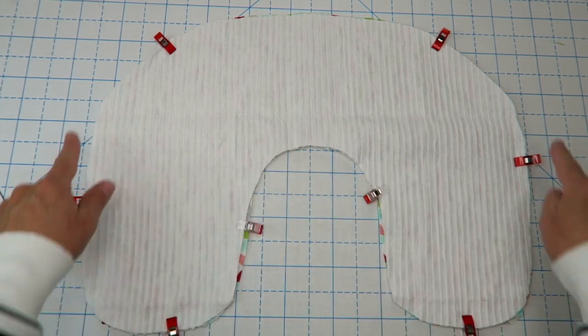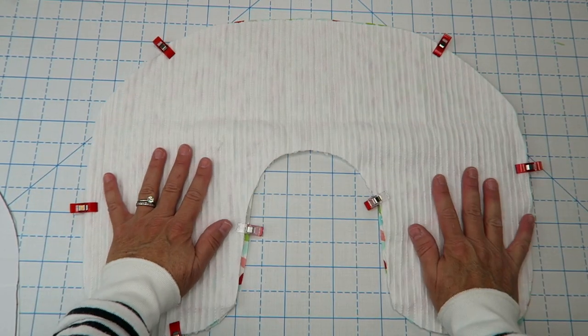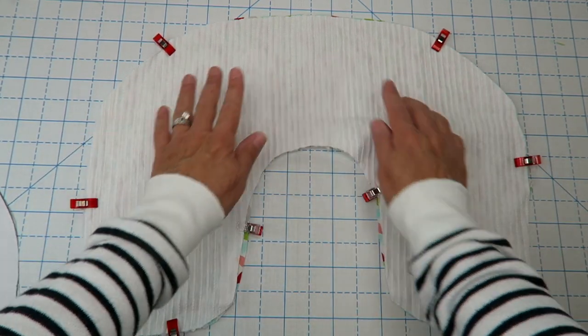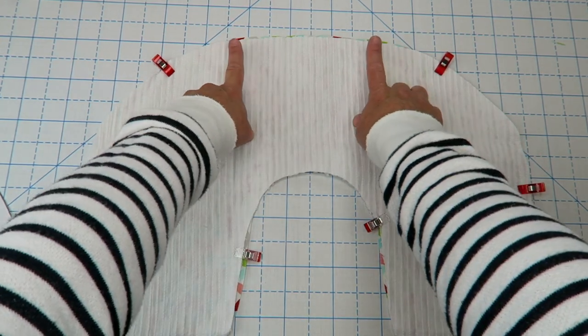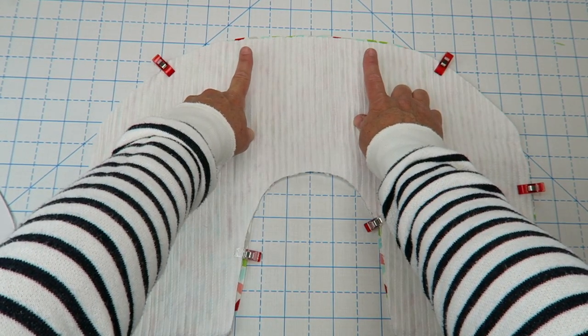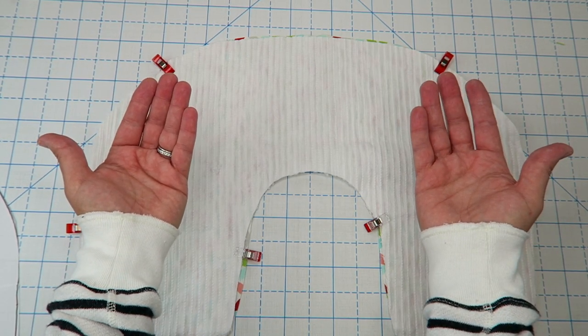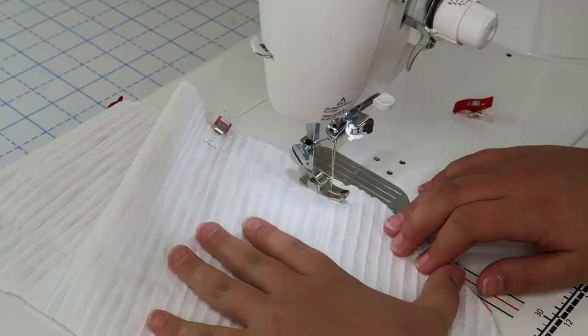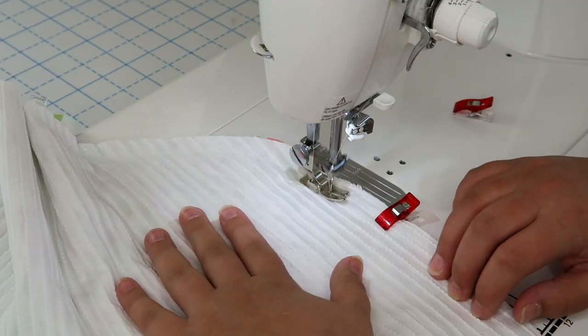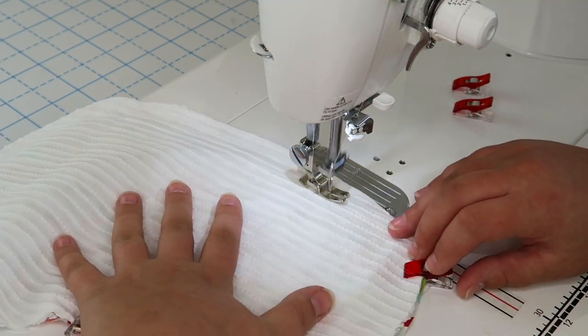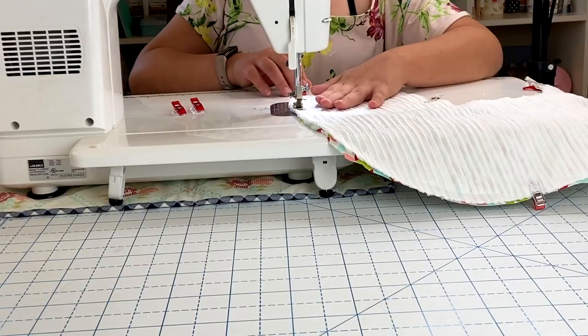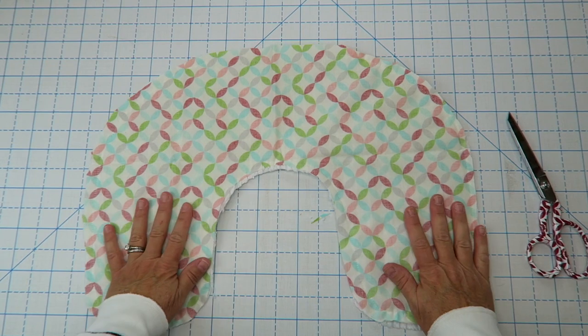Now that we have this clipped all the way around, we're going to go ahead and take it over to our sewing machine. We're going to sew all the way around the edges using a half an inch seam allowance and then we're going to leave about four or so inches at the top open so that we can turn our heating pad right side out when we are done.